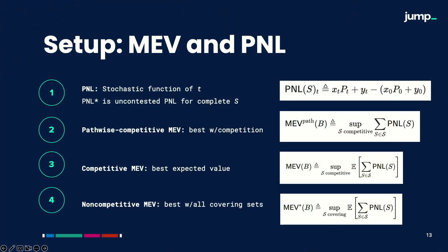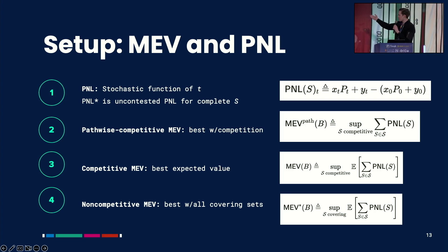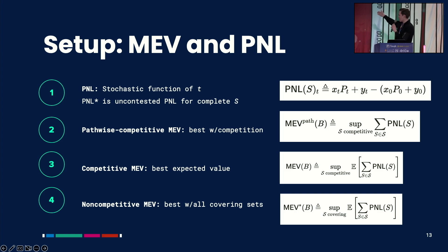Now, setup on the MEV and the PNL. We define a PNL as a stochastic function of T. There's also a PNL star — that is the uncontested PNL for a complete set of strategies, which adds up to all of the transactions. We have three notions of MEV, and part of the reason we've established all of these mechanics is to give a complete formalization in a rigorous way that can be tested and proved. The Pathwise Competitive MEV is the best MEV achievable under competitive circumstances with a condition of Path Independence — the lowest upper bound of the sum of all the PNLs of the strategies.